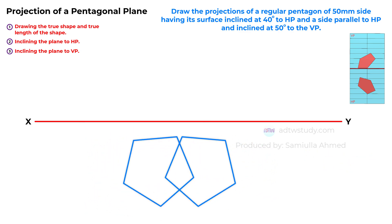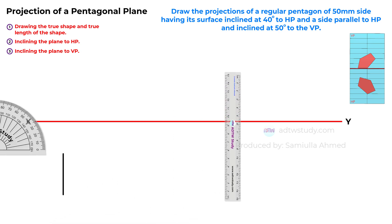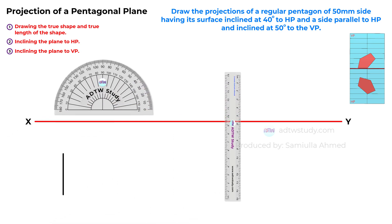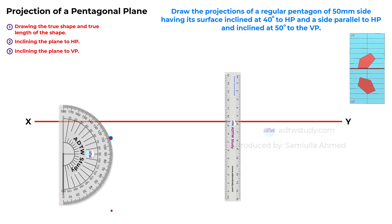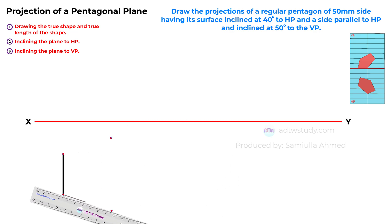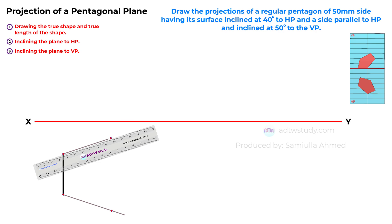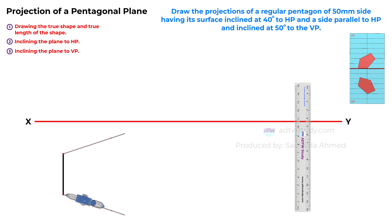Let's begin by drawing the pentagon. Grab a ruler and draw a vertical line 50 mm long below the reference line. Then using a protractor, mark a point at a 108 degree angle from each endpoint of this line. Connect these points to form the sides of the pentagon. Using a compass set to a radius of 50 mm, place the compass's center on each of these endpoints and draw arcs to complete the pentagon's true shape.